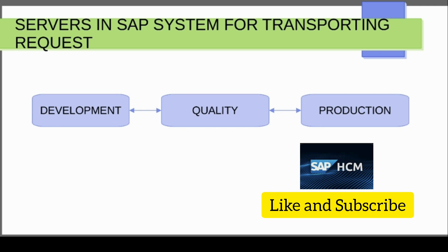When we say a project has gone live in SAP — an implementation project go live — that means the transport requests are transferred to the production system. Whatever configurations or ABAP developments are done in development and transferred to quality are finally transferred to production at the go-live step.